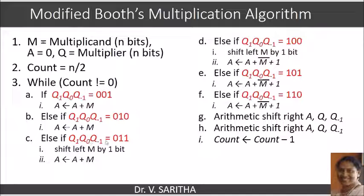If q1, q0, q-1 is equal to 011, we are going to have left shift of M by 1 bit and then perform addition of M to the partial product.